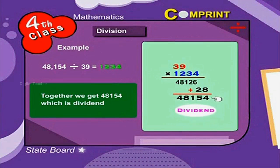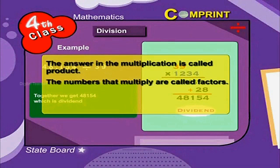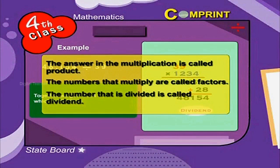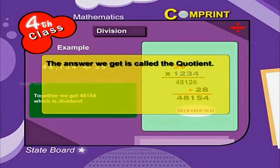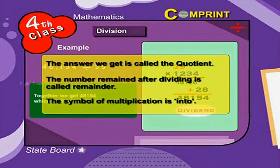Points to remember: The answer in multiplication is called the product. The numbers that multiply are called factors. The number that is divided is called the dividend. The answer we get is called the quotient. The number remaining after dividing is called the remainder. The symbol of multiplication is into, and the symbol of division is divided by.